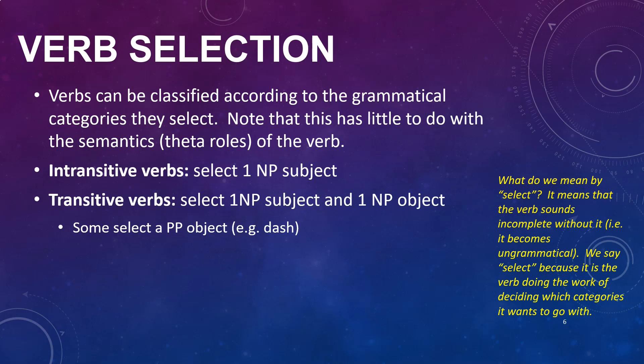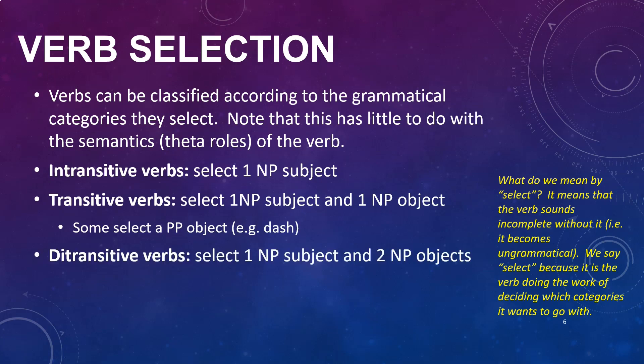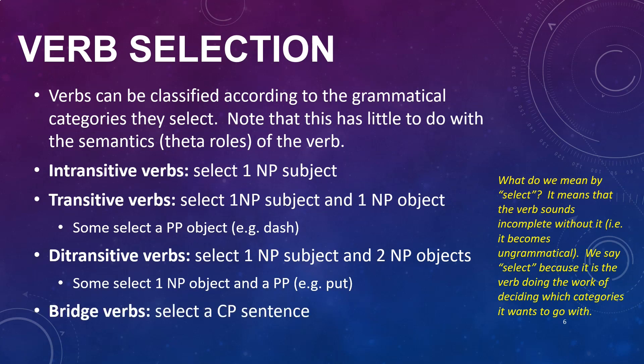Ditransitive verbs select one noun phrase subject and two noun phrase objects — some of course might select one noun phrase object and a prepositional phrase, for example 'put.' And then there are many other kinds of verbs; for example, bridge verbs select a sentence from which you can extract a question.